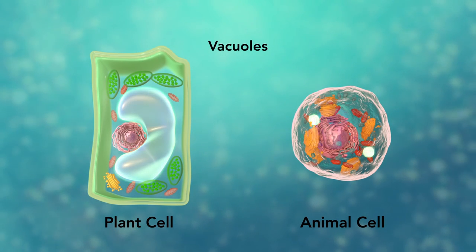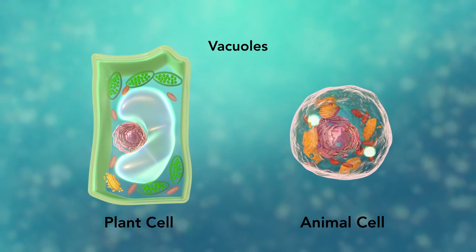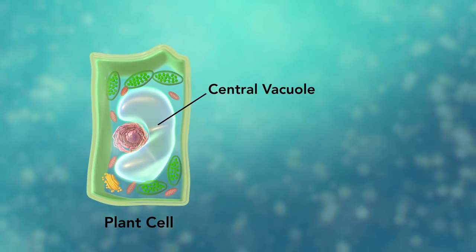Vacuoles are sac-like structures that store different materials. Here, in this plant cell, the central vacuole stores water.